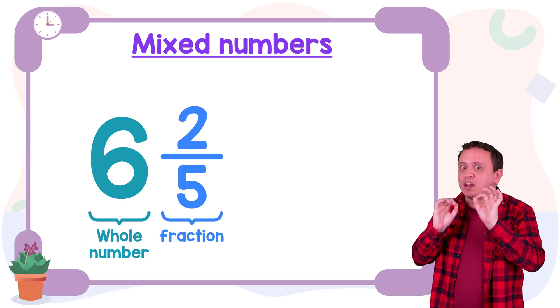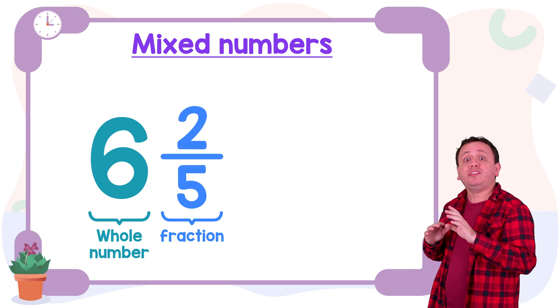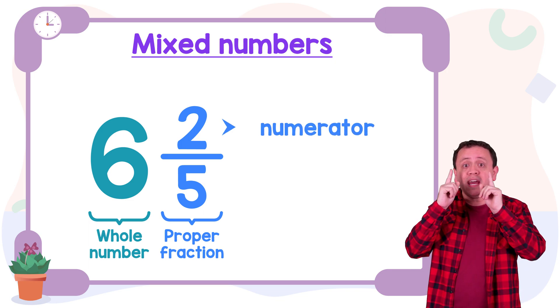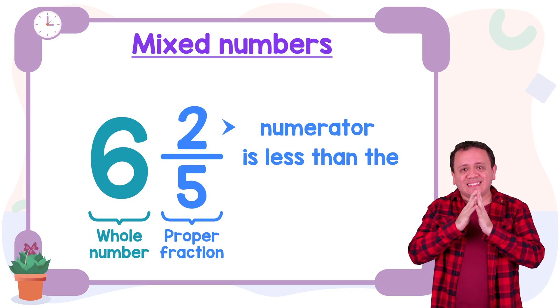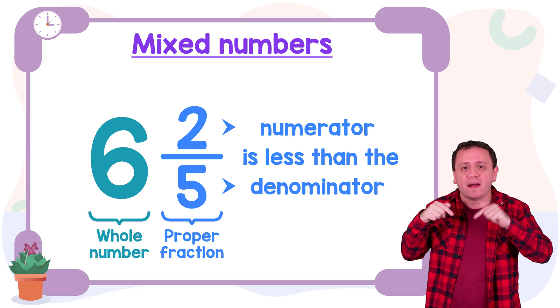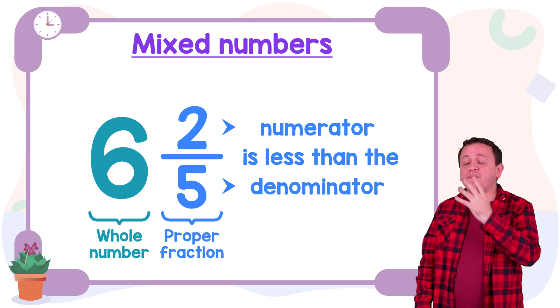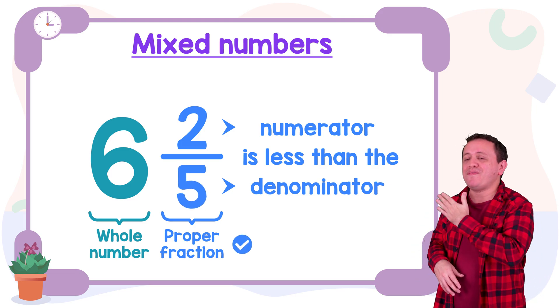But wait a second and let's take another look at this fraction because this is a proper fraction. Yes, this is a proper fraction, or a fraction where the numerator, the top number, is less than the denominator, the bottom number. In this case, the numerator 2 is less than the denominator 5. Therefore, this is a proper fraction.